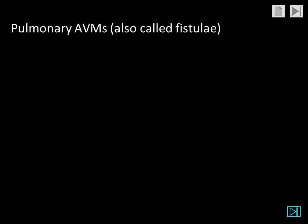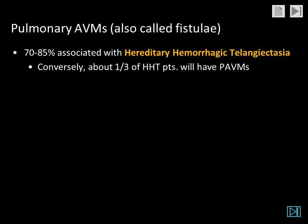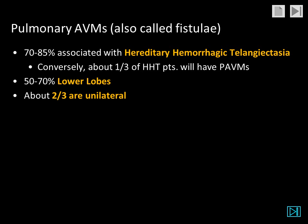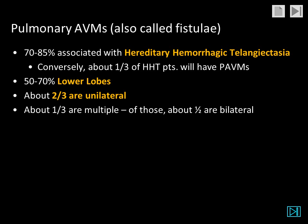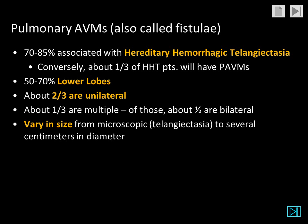Pulmonary AVMs are also called fistulae. The vast majority, up to 85%, are associated with hereditary hemorrhagic telangiectasia. Conversely, about one-third of patients with HHT will also have pulmonary AVMs. Up to 70% are in the lower lobes. The majority, two-thirds, are unilateral. Of the one-third of patients who have multiple lesions, about half of them are bilateral.